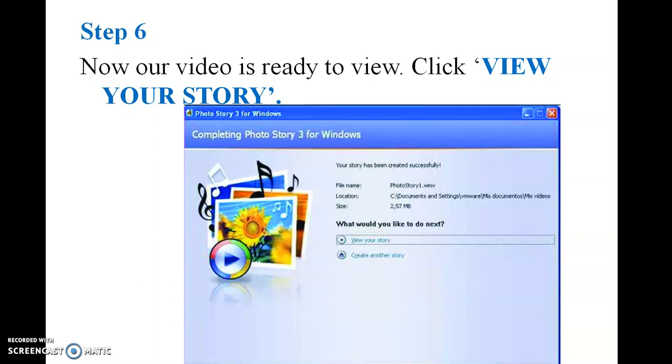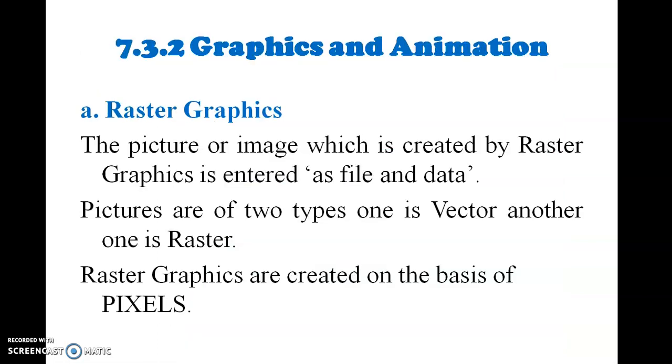Next thing: graphics and animation. There is a method called raster. Pictures are of two types: one is vector, another one is raster. Raster is made up of pixels. Your camera will say 10 megapixel, 13 megapixel camera. The pixel is a point.